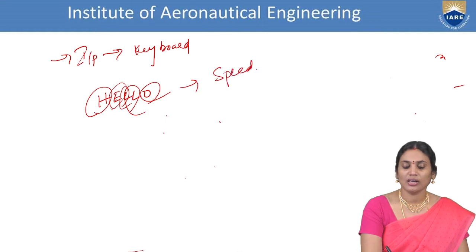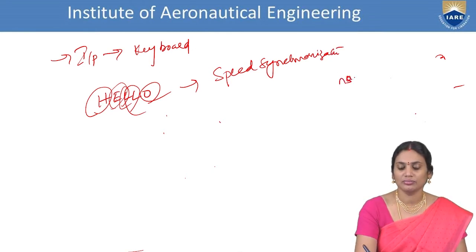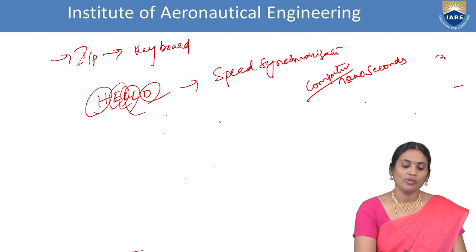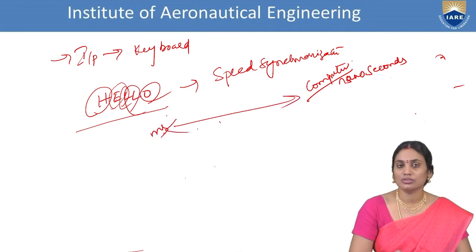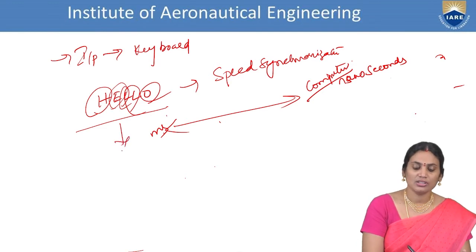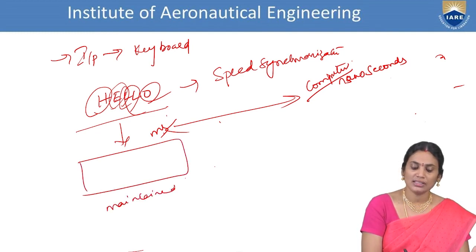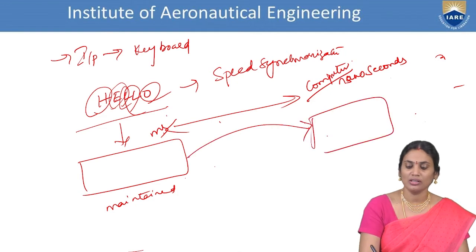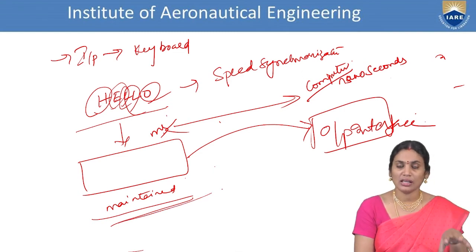Because of the speed mismatch, the characters being typed are maintained at some place first. Once all input is received completely, it is moved to the corresponding output interface. They will be maintained at some place — it can be a register or another storage — and once the complete input entry is done, it is enabled to the output interface.